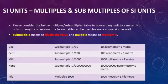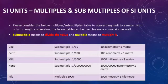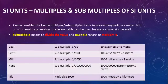Next comes the nanometer, generally represented by 10 to the power of minus 9. One followed by 9 zeros nanometers equals 1 meter. For kilo, which is a multiple, 1000 meters equals 1 kilometer, so you multiply the value by 1000. Multiples means you multiply the value, and submultiples means you divide the value.